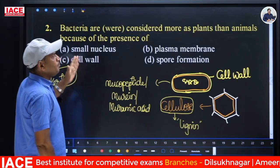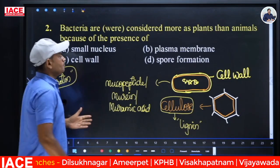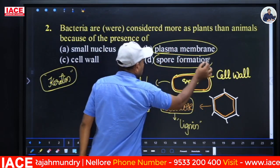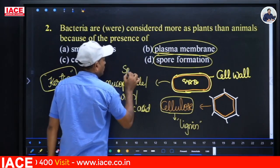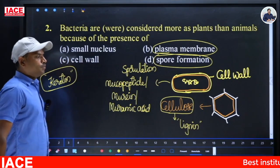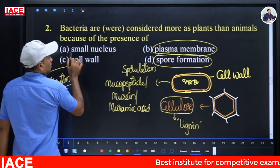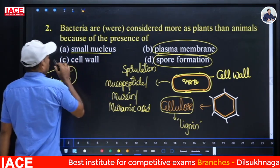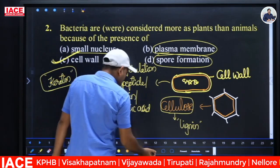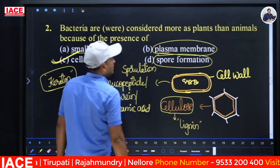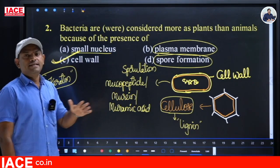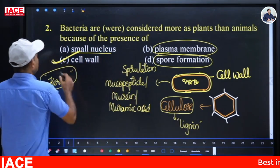Bacteria are considered more as plants than animals because of the presence of cell wall. In both plant and animal cells, plasma membrane is common. Bacteria reproduce by formation of spores — called sporulation. Nucleus is also present, but what makes us think bacteria resembles a plant cell is the cell wall. However, bacteria is not at all a plant cell. The answer for this question is cell wall.